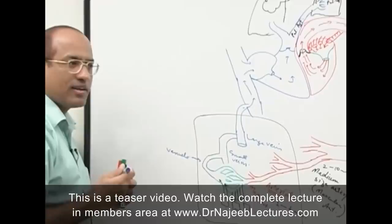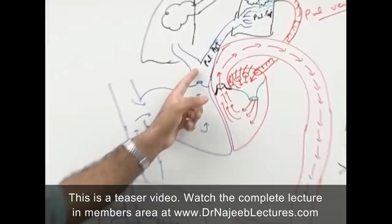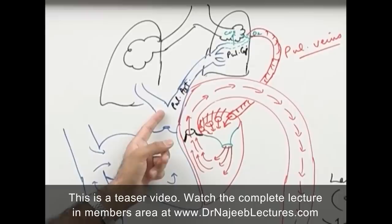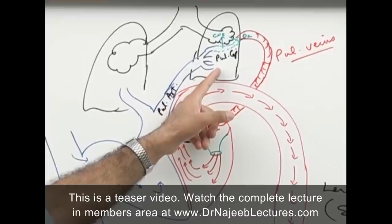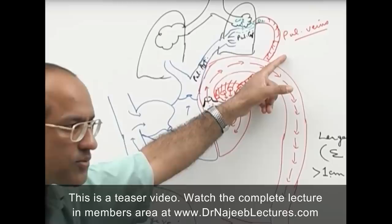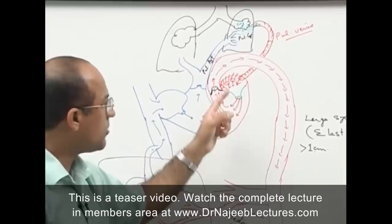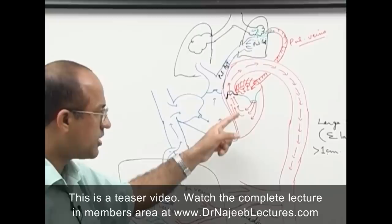To summarize: the right ventricle pumps blood into the pulmonary arterial system, which takes deoxygenated blood to the lungs. Through the pulmonary capillaries, blood gets oxygenated. Oxygenated blood then goes through the pulmonary veins to the left atrium, through the mitral valve to the left ventricle, and from the left ventricle through the aortic valve into the aorta.